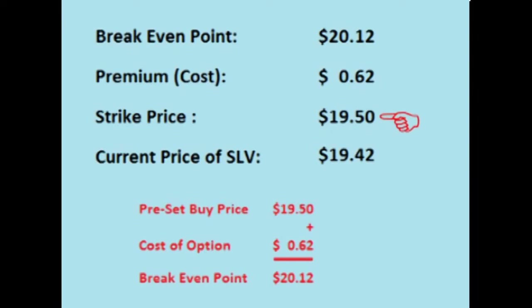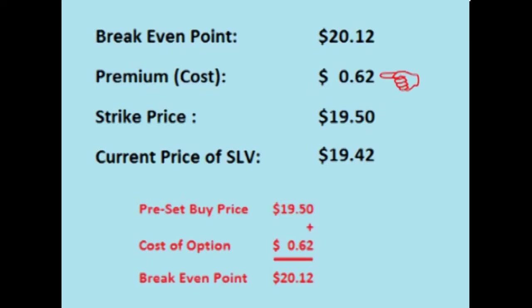The $19.50 strike locks in a preset buy price of $19.50 a share for an up-front cost of $0.62 a share. Because the $19.50 strike locks in a buy price above the current price of SLV, this option is out of the money — it has no intrinsic value. Its value comes only from volatility and the time left for SLV to possibly move above $19.50. With an up-front cost of $0.62, the price of SLV must rise above $20.12 before the option expires for the trade to be profitable.